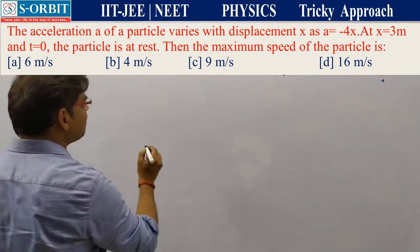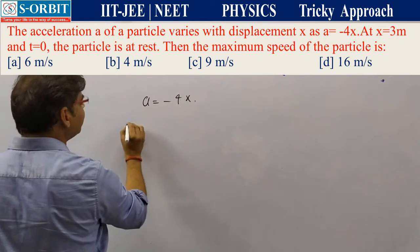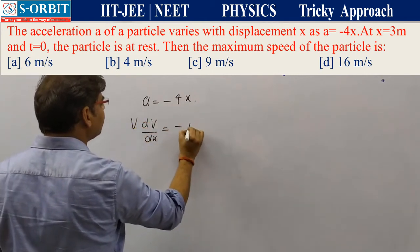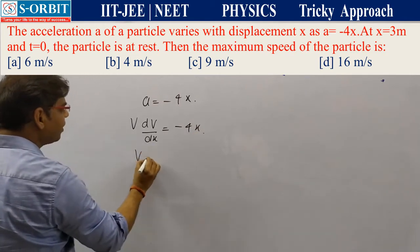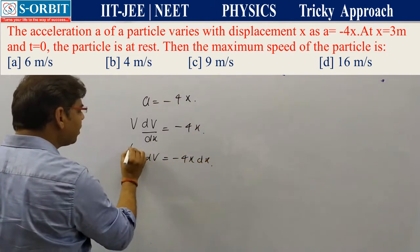Given a = -4x, we write v dv/dx = -4x. So v dv = -4x dx. Now, integrating both sides.